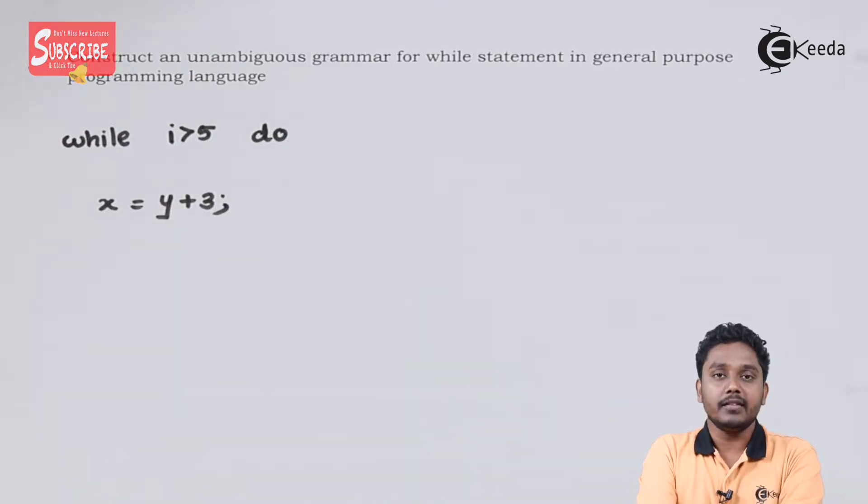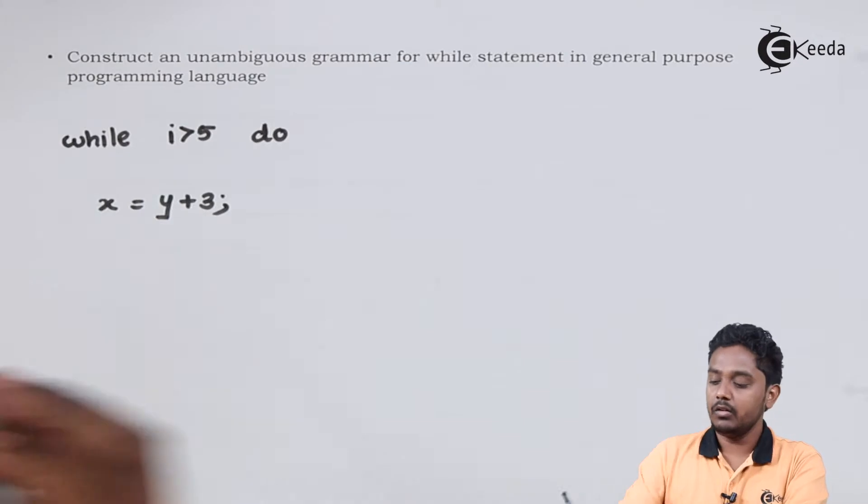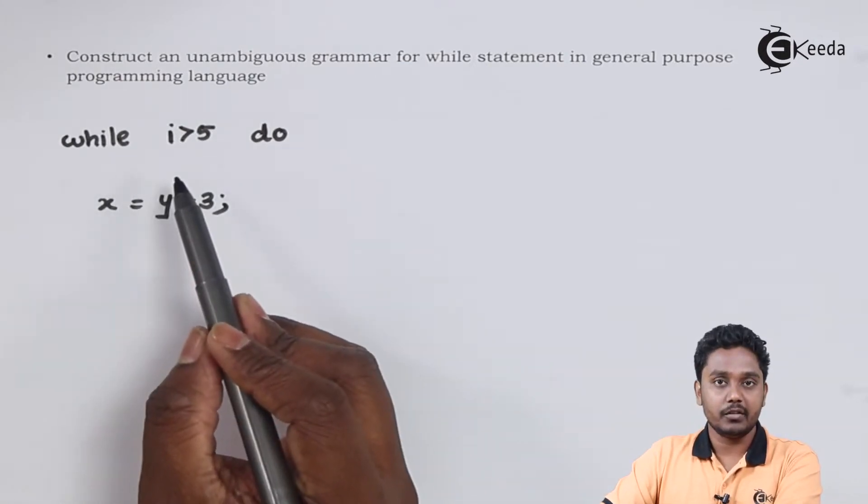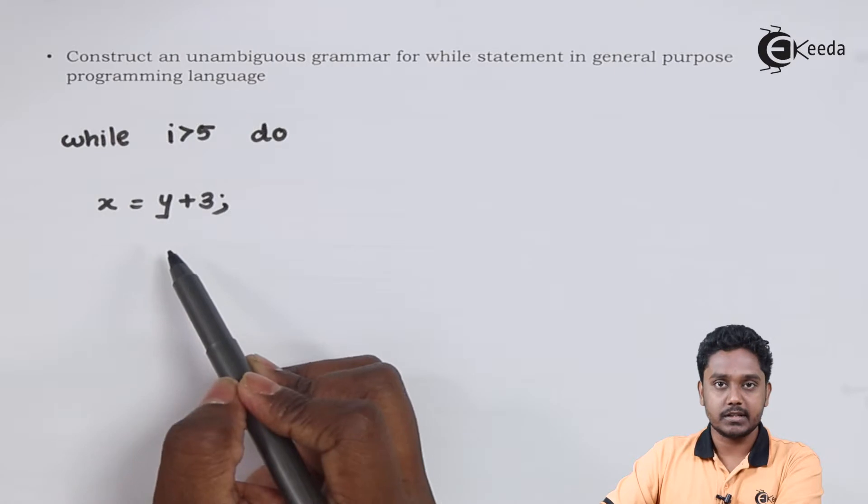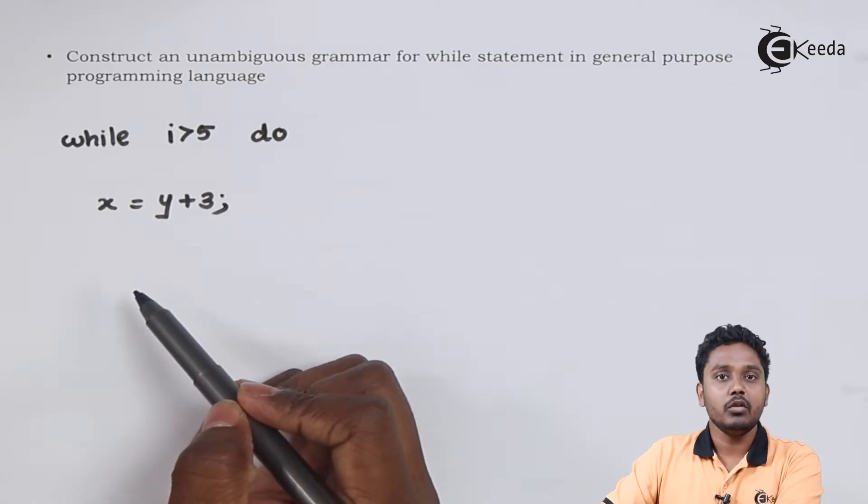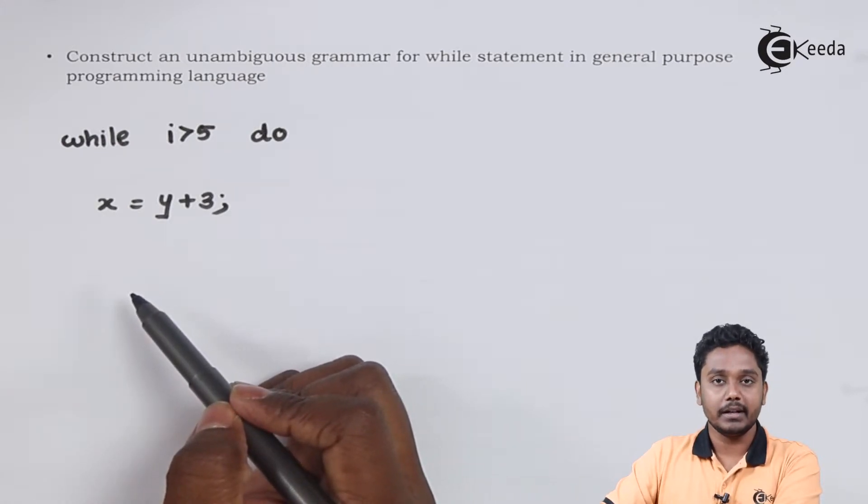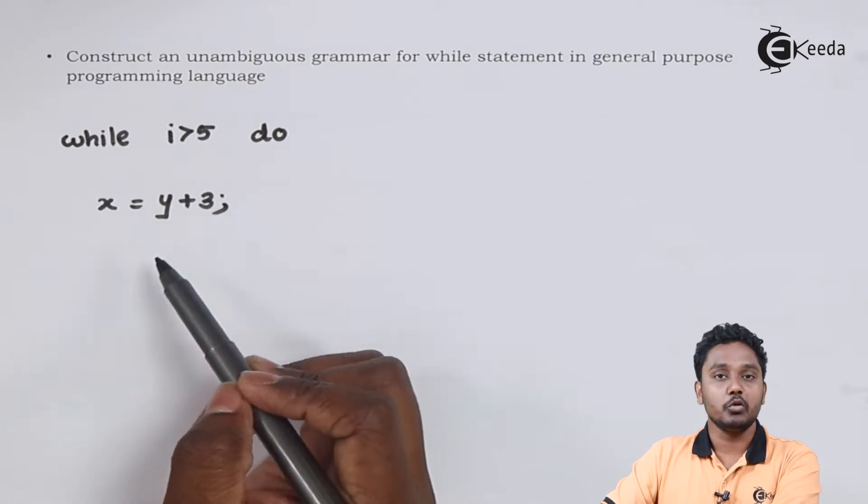Over here I have written a sample program using while: while i greater than 5 do x is equal to y plus 3. In this program the value of x would be incremented by 3 each time the particular loop is executed.